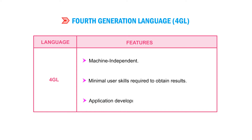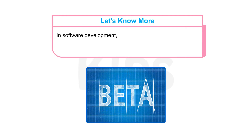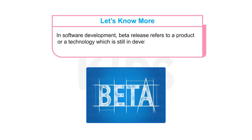Students, let us know more. In software development, a beta release refers to a product or technology which is still in development but released only for testing and evaluation purposes.